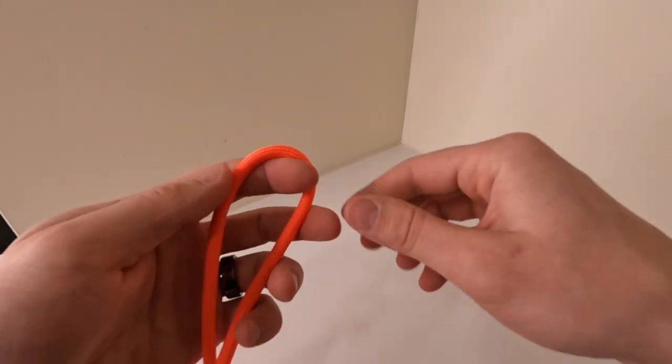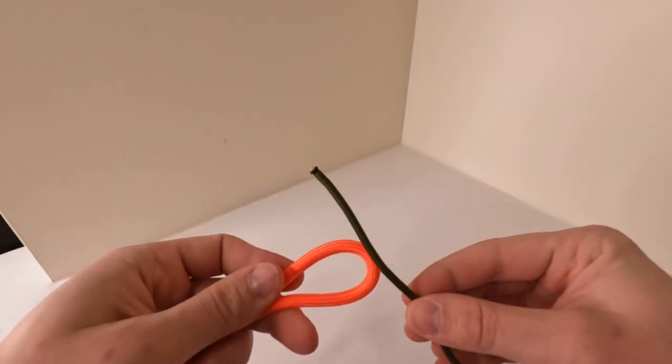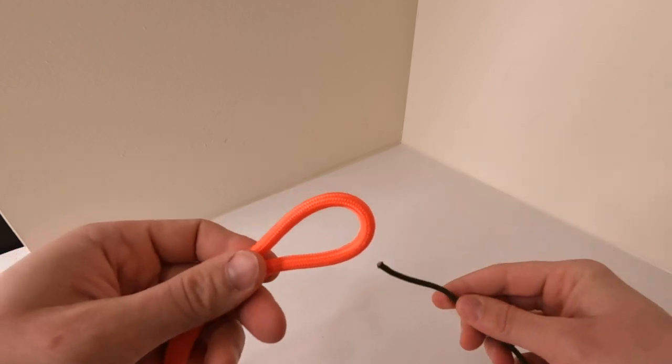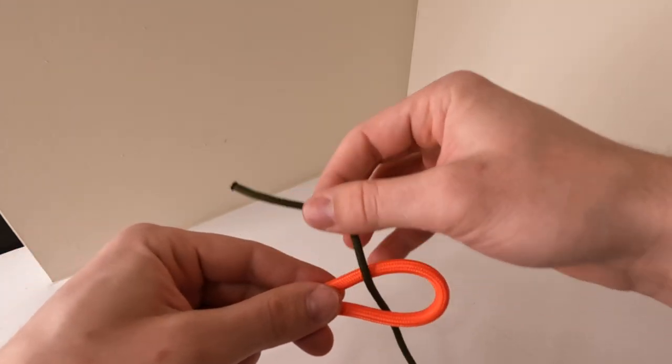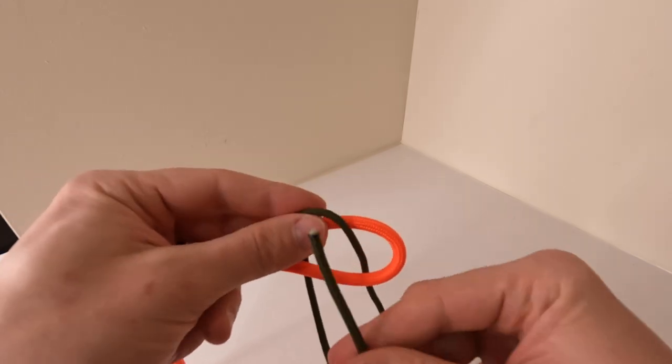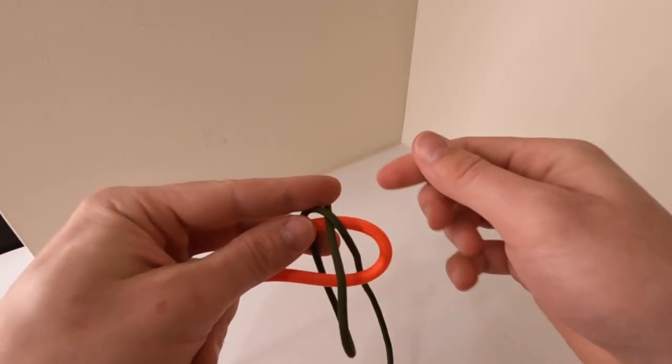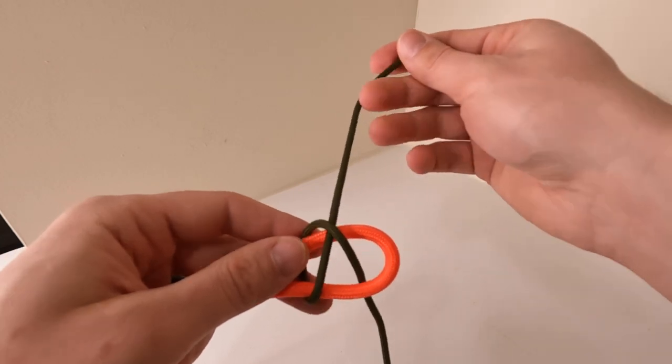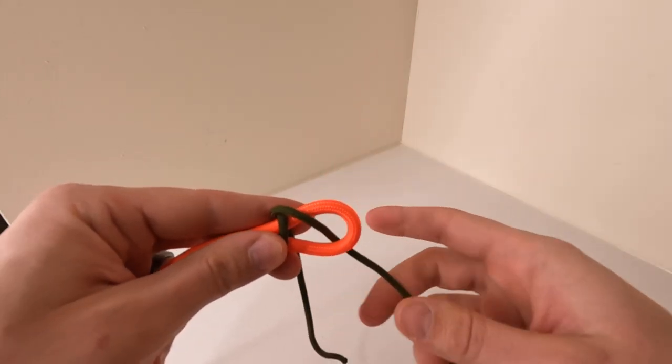For added security you can do a double sheet bend. I'm going to use this example of two different size ropes. Same as the sheet bend you go through over and under back under the standing part but this time you'll make one more loop over and under and through.